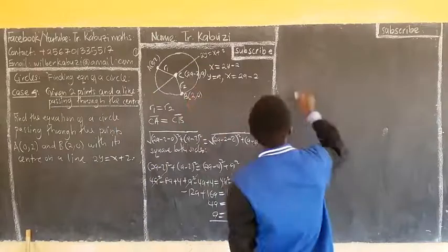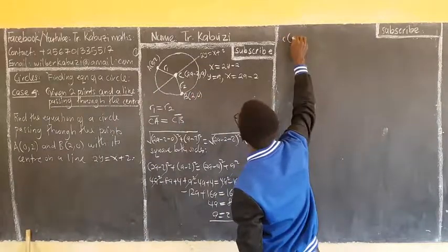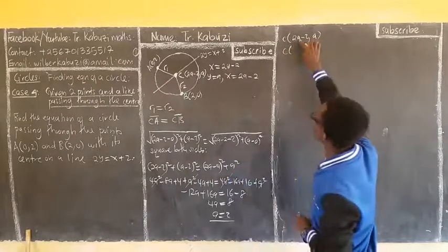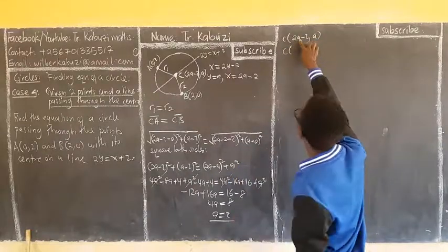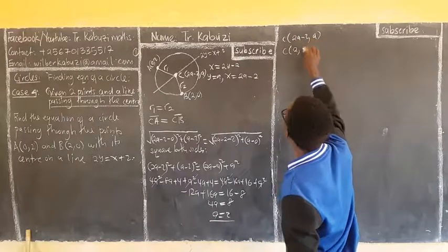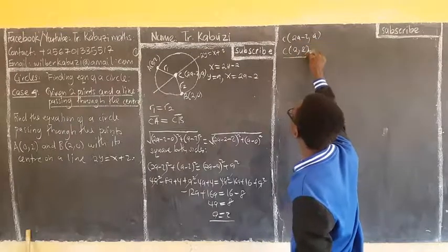So, remember, you can easily get our center. Our center was 2a minus 2, a. Meaning, my center is supposed to be, a is 2. So, I will be adding 2 times 2, which is 4 minus 2, which is 2. Comma, a is 2. So, remember, this is my center.